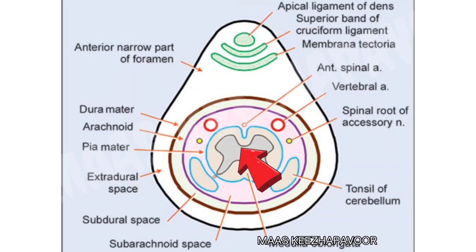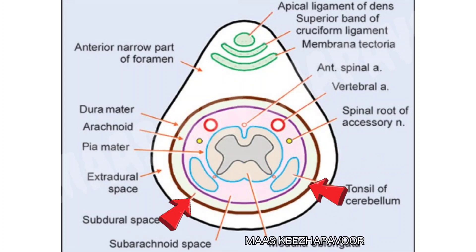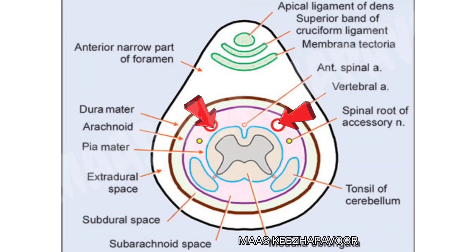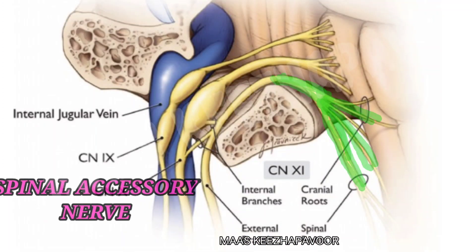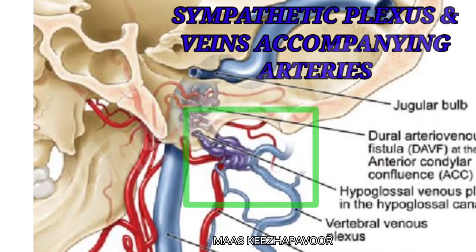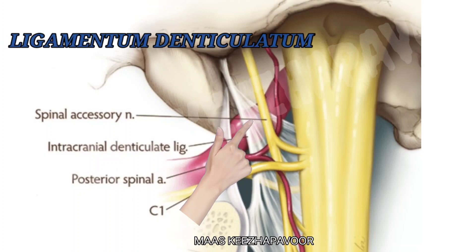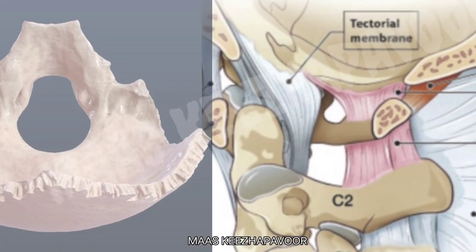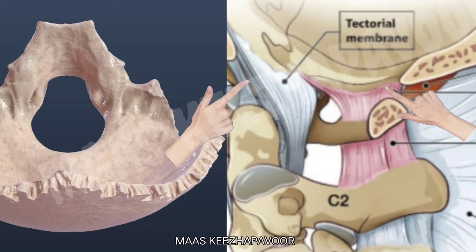The structures passing through the posterior compartment of the foramen magnum are: the lower part of medulla oblongata becoming the spinal cord; meninges and cerebrospinal fluid; the lower part of the tonsil of the cerebellum; the right and left vertebral arteries and anterior spinal artery; the right and left posterior spinal arteries; the spinal accessory nerve; sympathetic plexus around the blood vessels; veins accompanying the arteries leaving the cranial cavity; and the first teeth of the ligamentum denticulatum. The anterior and posterior borders of the foramen magnum give attachment to the anterior and posterior atlanto-occipital membranes respectively.